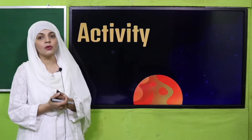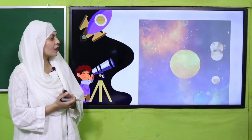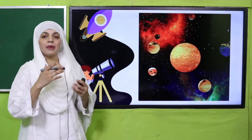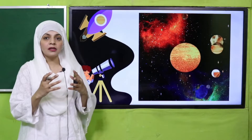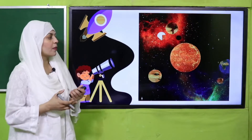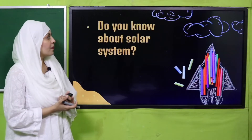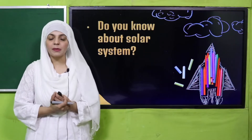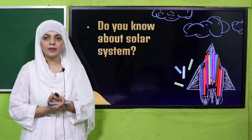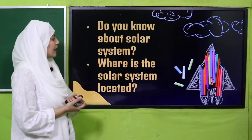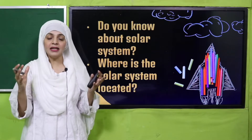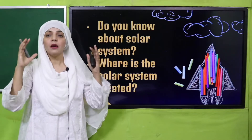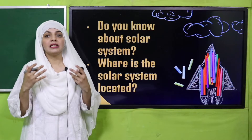Let's start with an activity. Here you can see the solar system — eight planets are revolving around the sun. This system, which includes our Earth, is called the solar system. Quickly tell me: do you know about the solar system? Very good! Now, where is the solar system located? It is inside the Milky Way — our galaxy — that is where it is located.